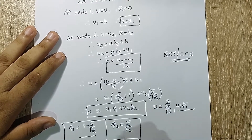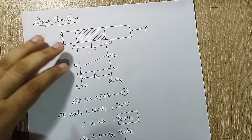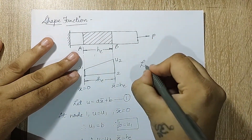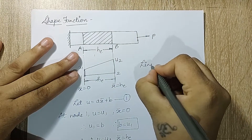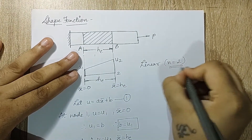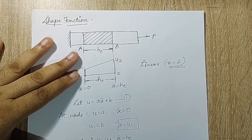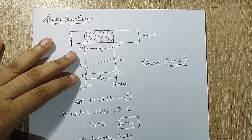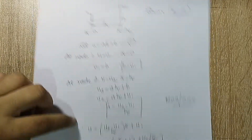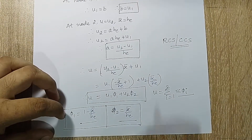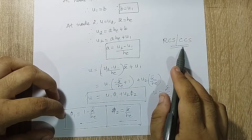These are the shape functions for a linear element. Linear means there are only two nodes; nodes are indicated by n in this lecture series, so n = 2 means a linear element. These two shape functions are expressed in the rectangular or Cartesian coordinate system.